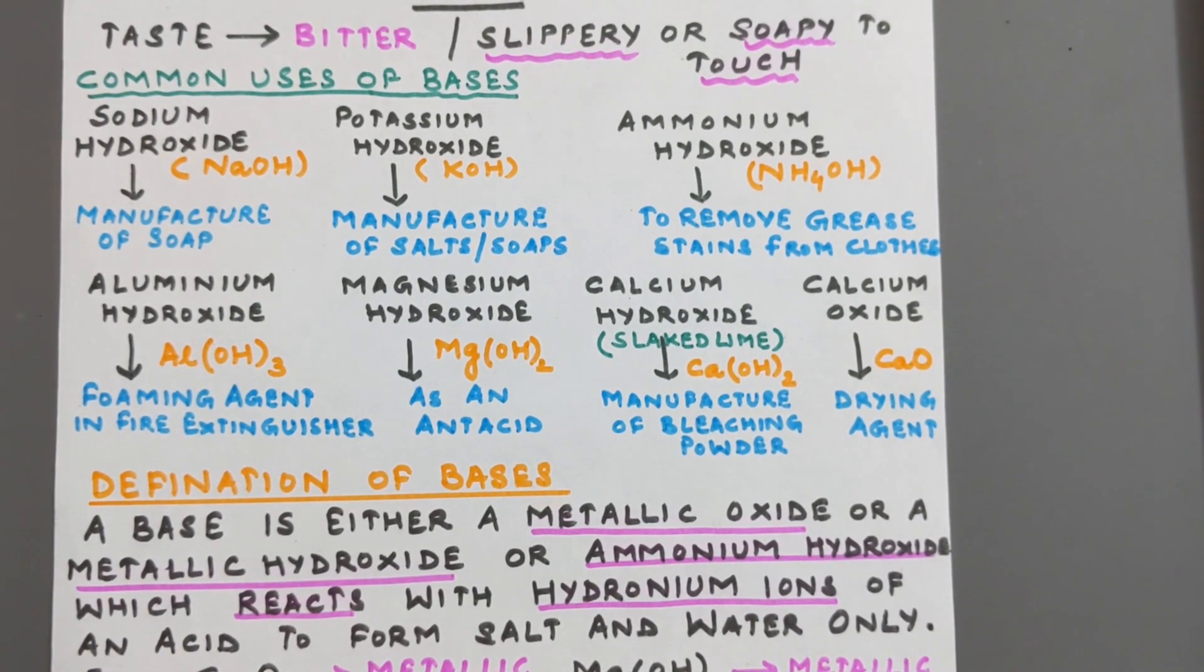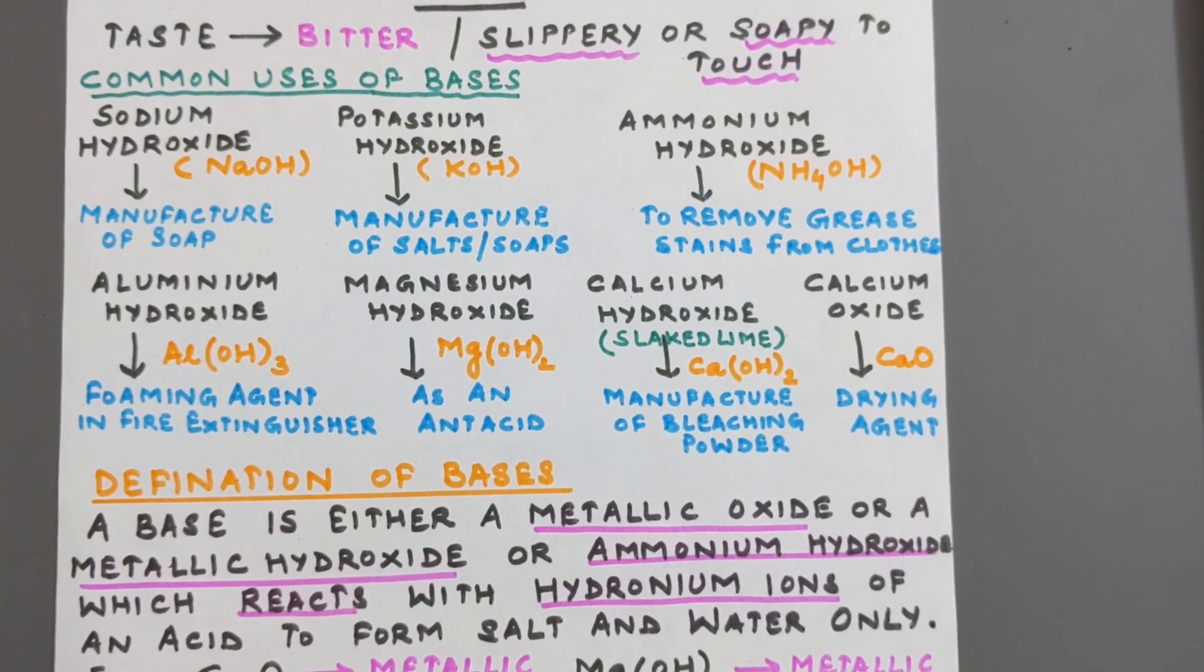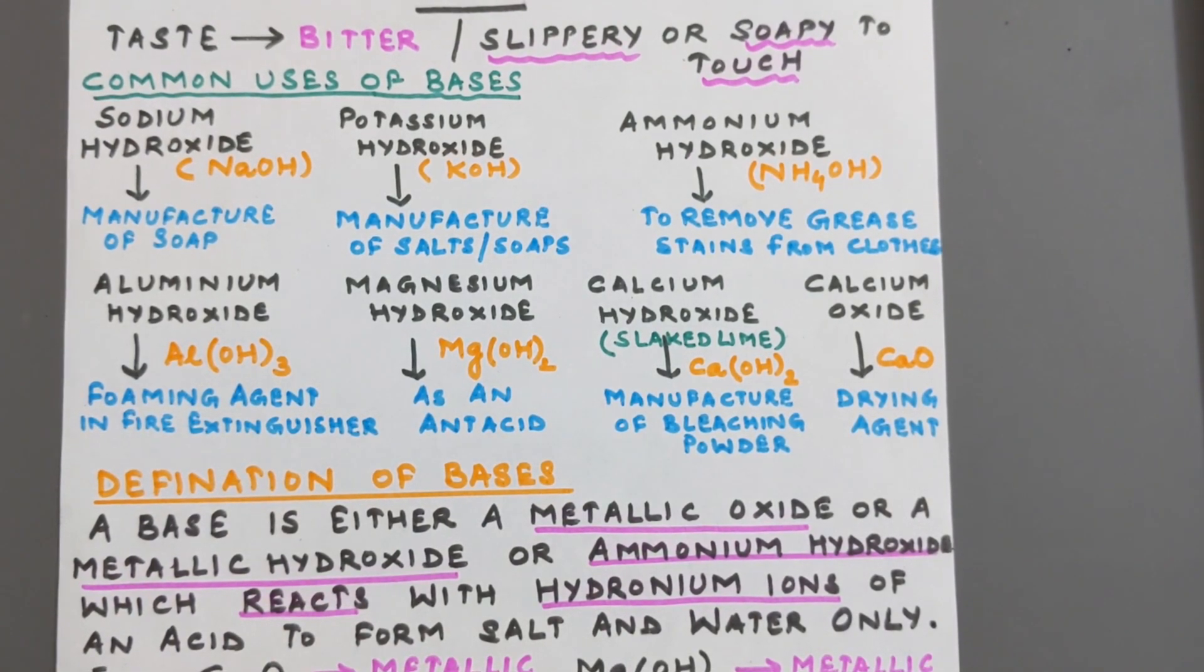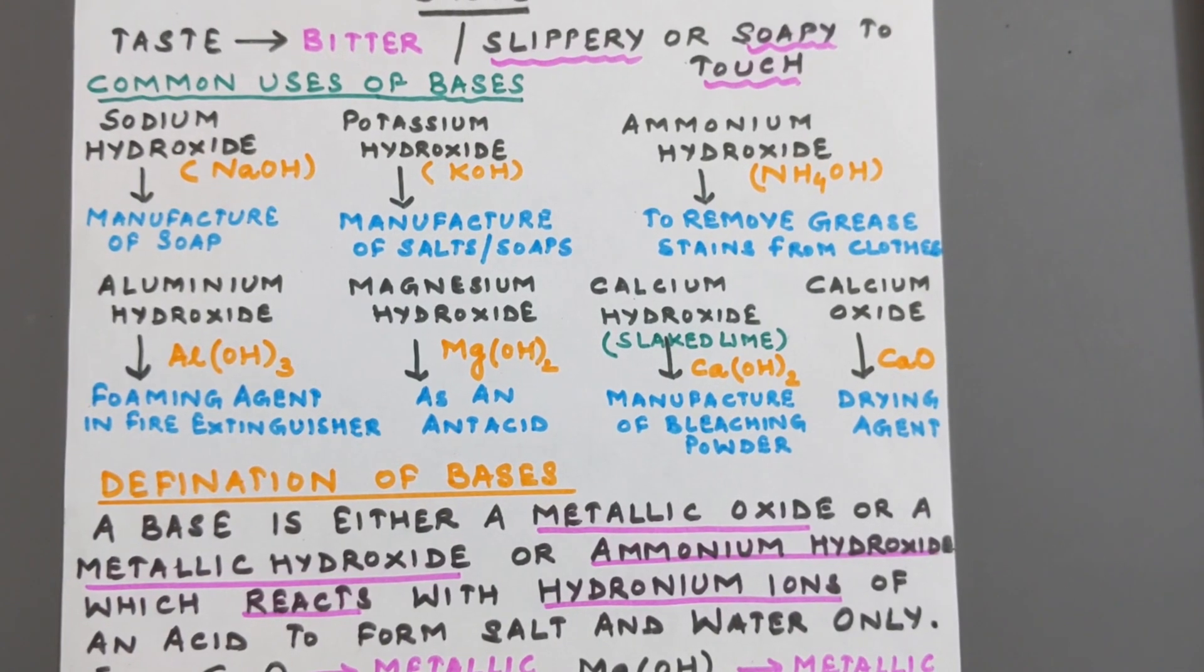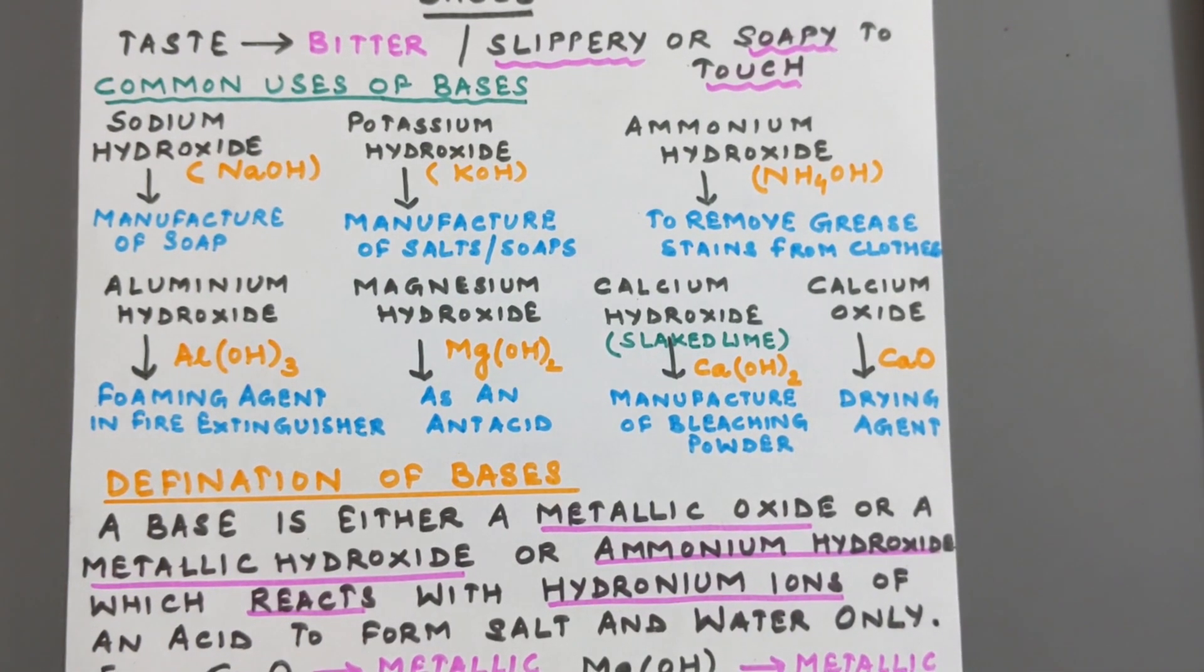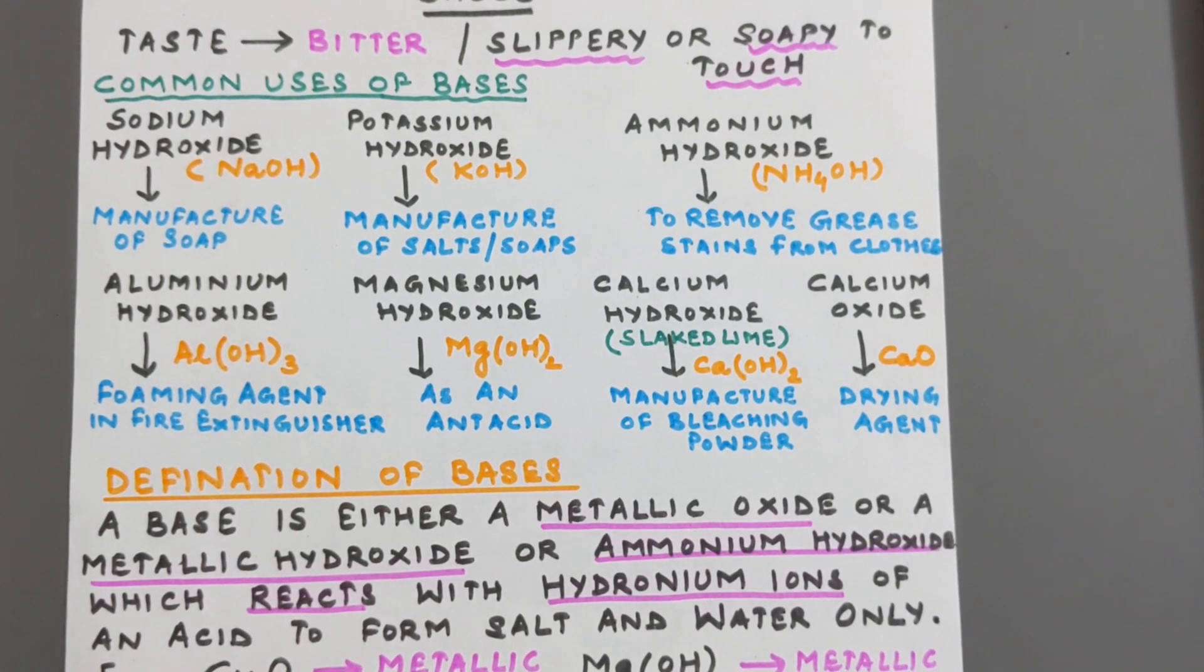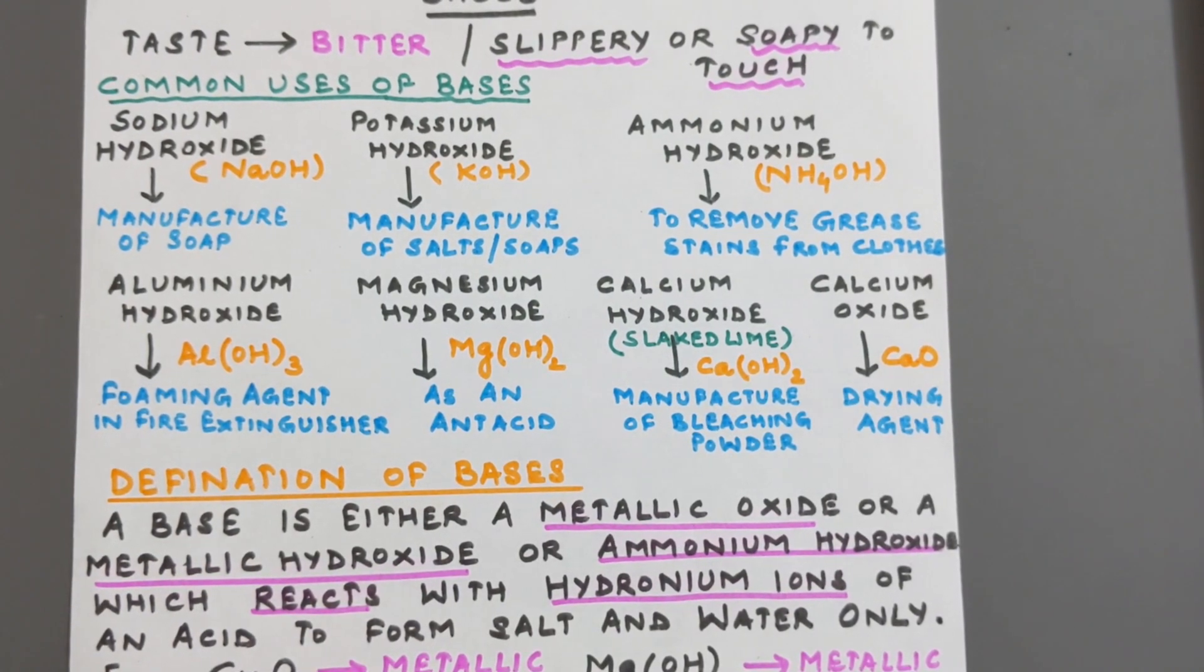Magnesium hydroxide Mg(OH)2 acts as an antacid which is used to neutralize the effect of acidity. Calcium hydroxide known as slaked lime Ca(OH)2 is used in the manufacturing of bleaching powder. And calcium oxide which is known as quicklime CaO, it is used as a drying agent.